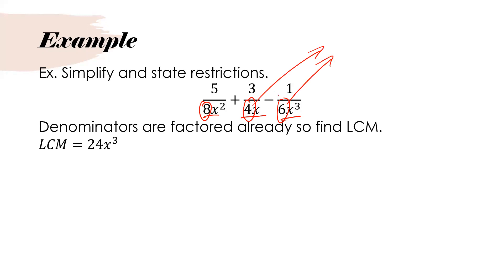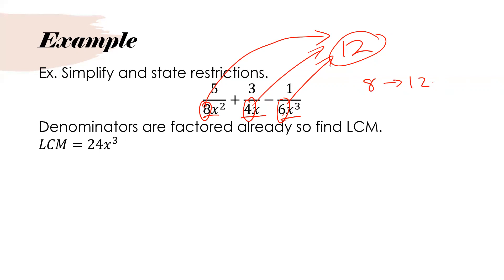Let's focus on the lowest common multiple for 4 and 6. The lowest common multiple for 4 and 6 is 12. But whatever multiple I choose also has to be a multiple of 8, and 8 does not go into 12. If I multiply 8 times 3, that gives me 24, and 24 can be divided by 4, 6, and 8. So my lowest common multiple for the numerical coefficients is 24.